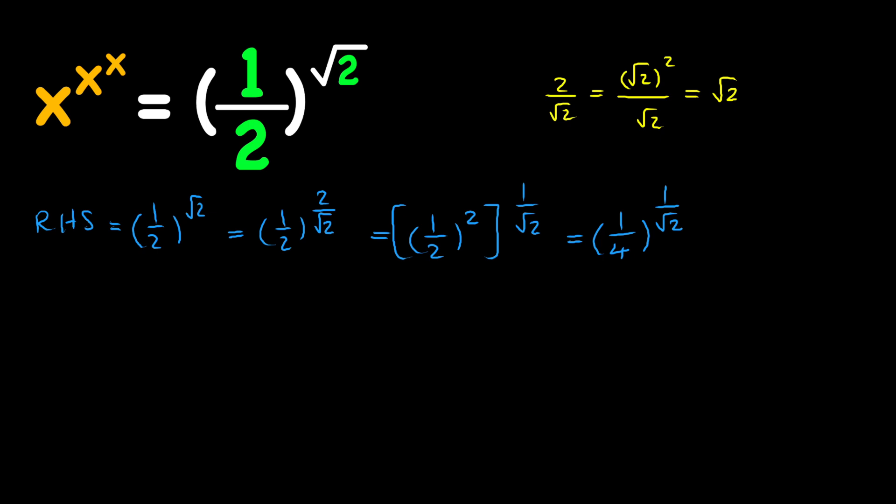Next, let's go ahead and focus on this, one over square root of two. So one over square root of two can be written as one over two to the power of one-half, thanks to the power of exponents.